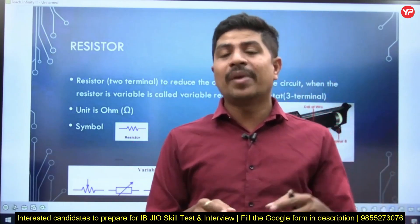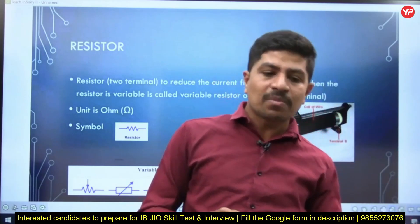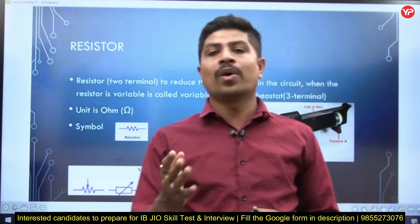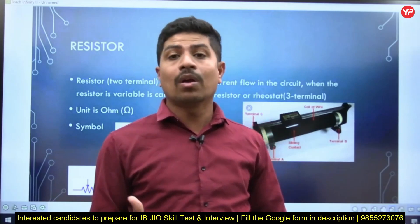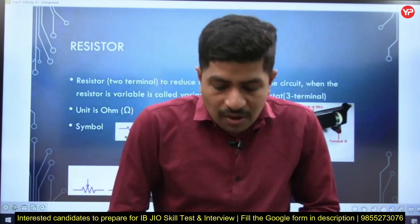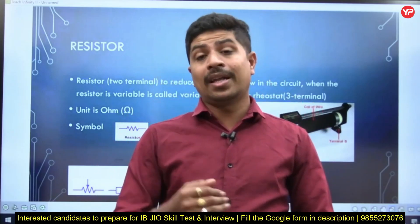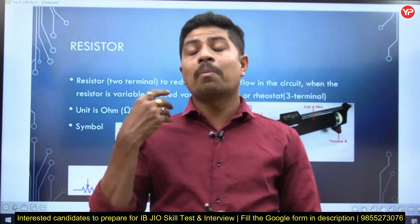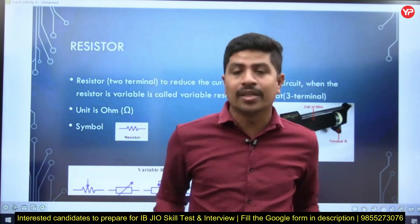Suppose there is an ammeter, a voltmeter, or a wattmeter. If you see from the left side, the reading will look one way. If you see from the right side, it will look another way. If you see from the top, the reading will look yet another way. So how do you eliminate the parallax error? From where are you going to take the reading?